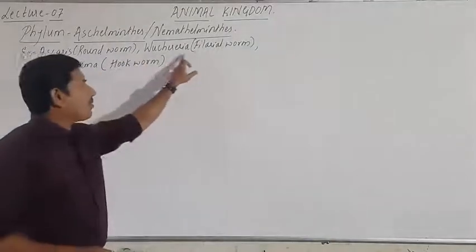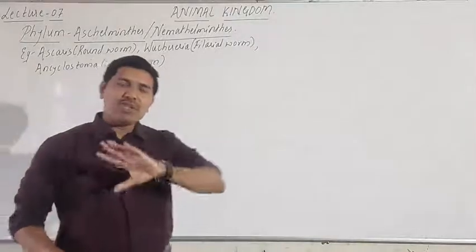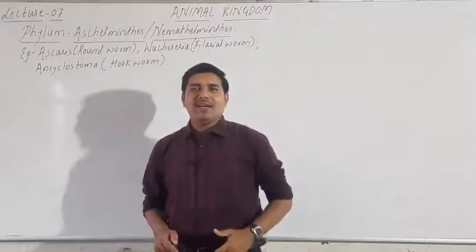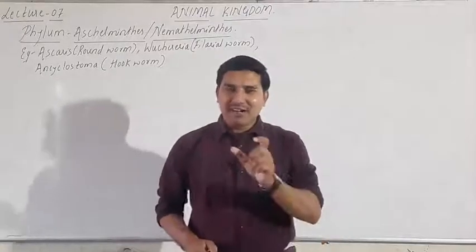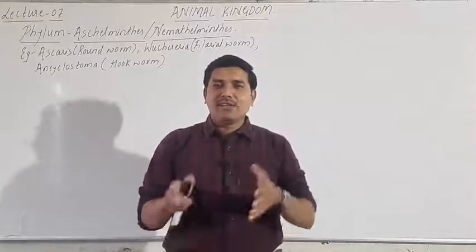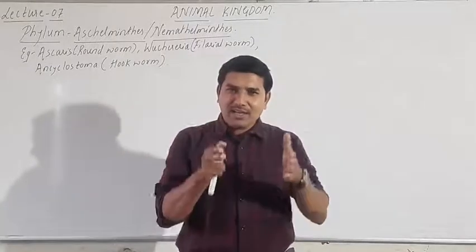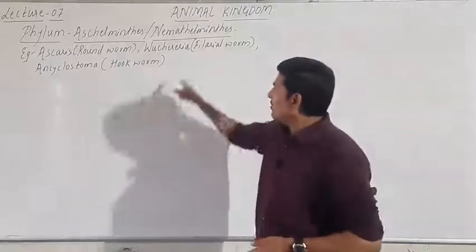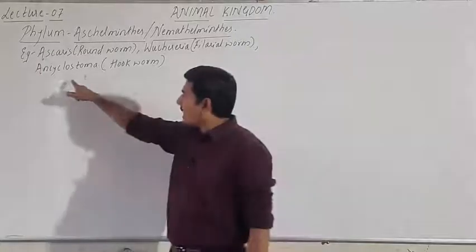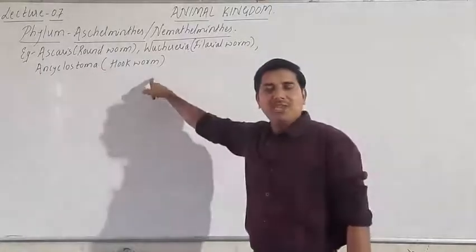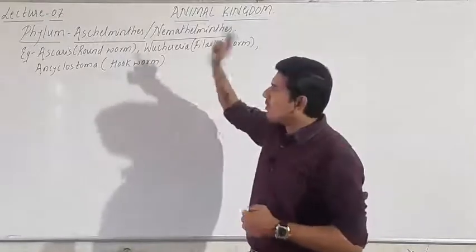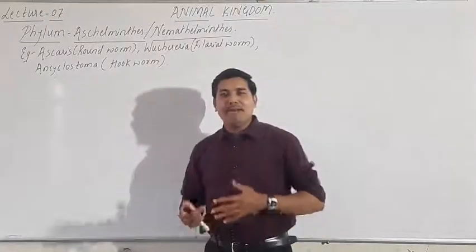Another example is Wuchereria, commonly called the filarial worm — Wuchereria bancrofti. This causes a disease called elephantiasis. One more example is Ancylostoma, which is again a parasite present inside the body. So the majority of these animals are parasitic.